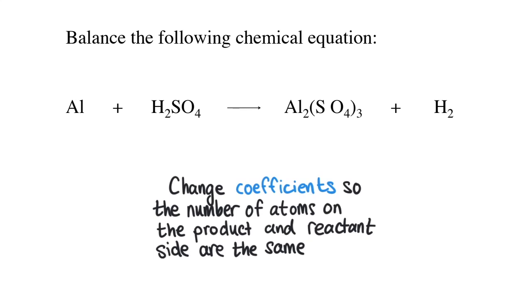Balancing a chemical equation is when you change the coefficients, that's the numbers in front of each chemical formula, so that the numbers of atoms on the product and reactant side in the equation are the same.